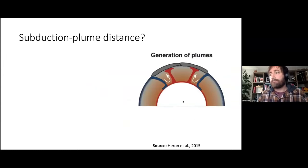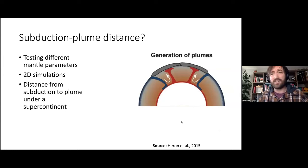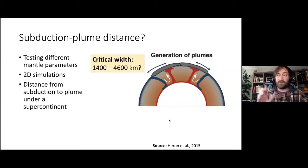One of the papers we did a few years ago looked at this generation of plumes and is there a kind of subduction-plume distance that we can start to look at. We tested lots of different mantle parameters through lots of 2D simulations to get a big bulk of information behind us. We tried to analyze the distance of subduction to plume under a supercontinent and found this critical area here. Through testing lots of different mantle parameters, there's a critical width of about 1400 to 4600 km that could potentially form a plume underneath this supercontinent. Not really close to a subduction zone but not very far away, it's kind of a critical area. Lots of people have done work on this and we've just thrown our hat into the ring.